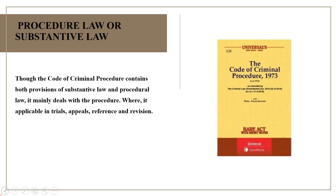Though the Code of Criminal Procedure contains both provisions of substantive law and procedural law, it mainly deals with procedure where it is applicable in trials, appeals, reference and revision. The Code provides machinery for the punishment of offenders, formulates the duties of the police in investigating an offence, and prescribes the mode of arresting an offender. It empowers the machinery to take assistance from members of the public to arrest the offender and in the prevention of breach of peace.